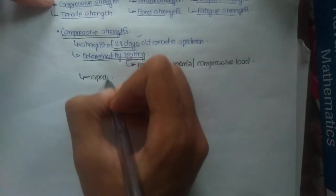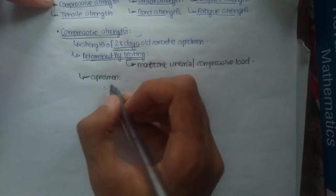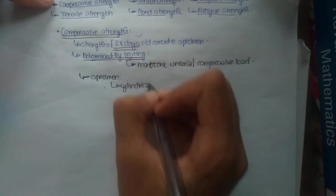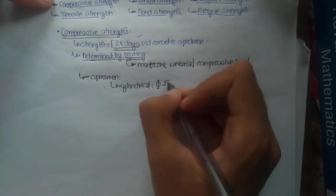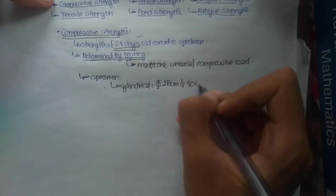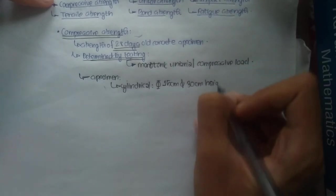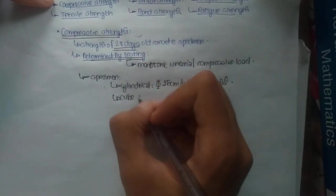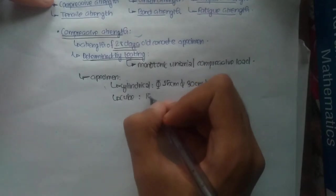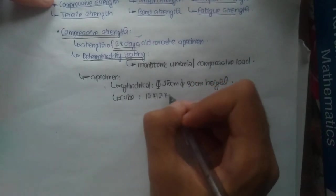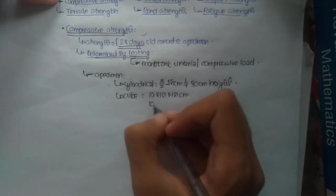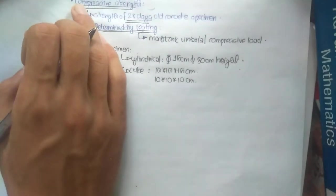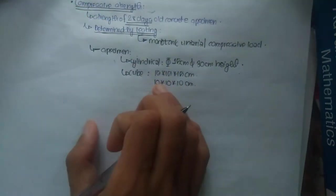In order to test compressive strength, concrete specimens are designed and are basically of two types. First is the cylindrical specimen, which is 15 cm in diameter and 30 cm in height. Next, we have the cubical specimen, which has dimensions of 15×15 cm, but may also be 10×10 cm.